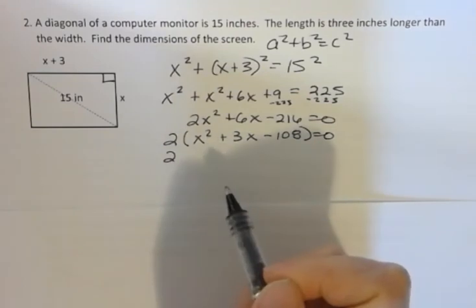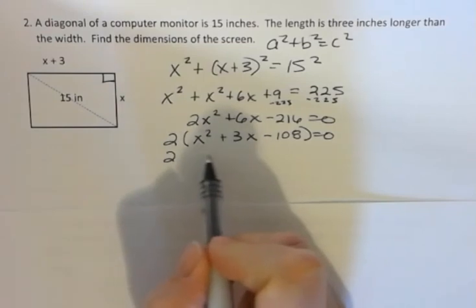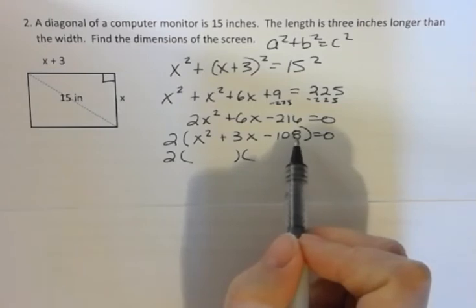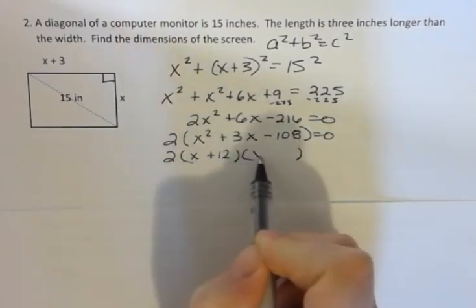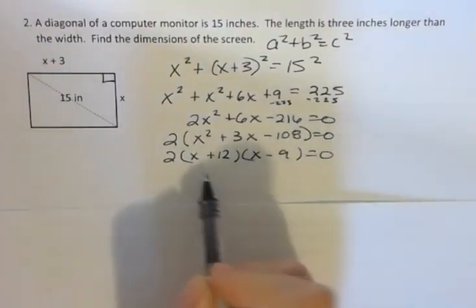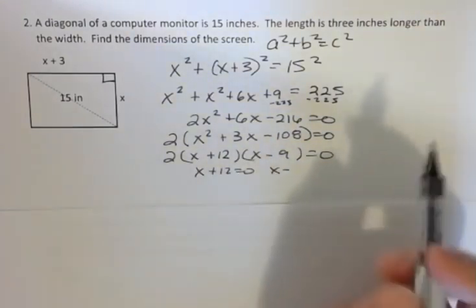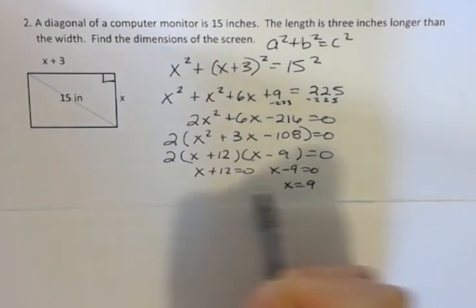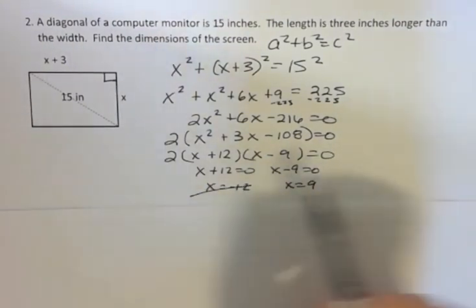I'm not teaching factoring or foiling in this video but I definitely have videos about that if you want to go back and find that somewhere. I'm going to factor this. I need two numbers that multiply to 108 but add to 3x and that's going to be positive 12 and negative 9. Set both of those equal to 0 to solve. Notice I'm just ignoring the 2 because I could divide both sides by 2 and just get rid of that and I get x equals 9 or x equals negative 12.